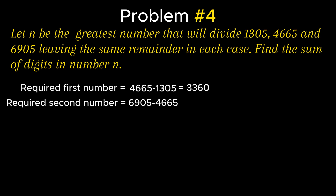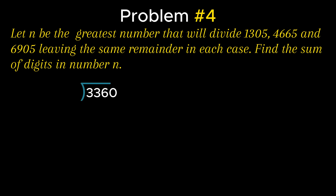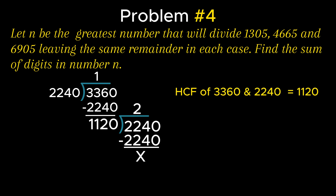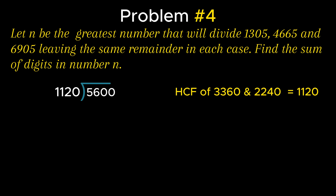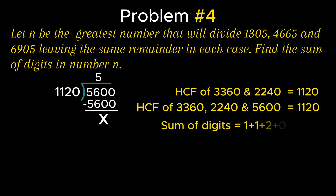The third number equals 6905 − 1305 = 5600. Since these are four-digit numbers, the cross-division method is used to calculate the HCF. Dividing 3360 by 2240 gives remainder 1120. Since 1120 perfectly divides 2240, the HCF of 3360 and 2240 is 1120. Since 1120 also perfectly divides 5600, the HCF of 3360, 2240, and 5600 is 1120. Therefore the sum of the digits equals 1 + 1 + 2 + 0 = 4.